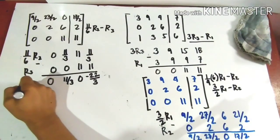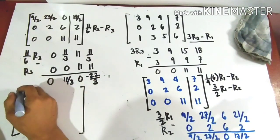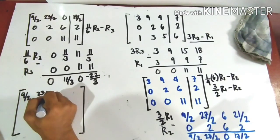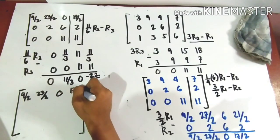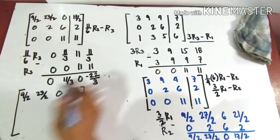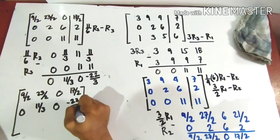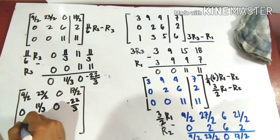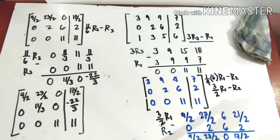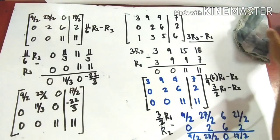We now form the new matrix. Row 1 (copied): 9/2, 23/2, 0, 17/2. Row 2 (new): 0, 11/3, 0, −22/3. Row 3 (copied): 0, 0, 11, 11. The next target is the y of row 1, which is 23/2.